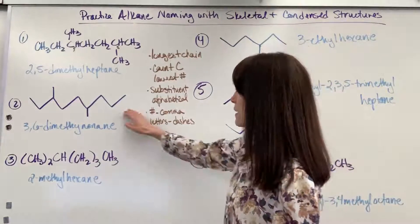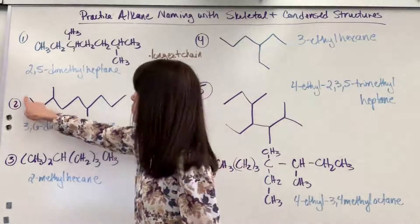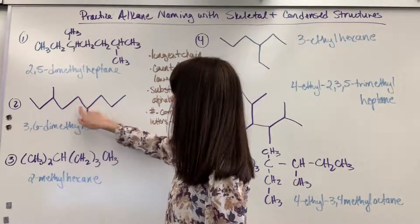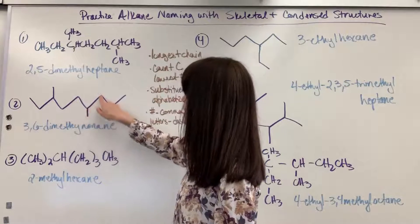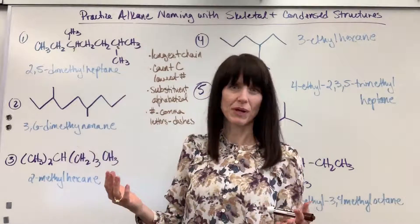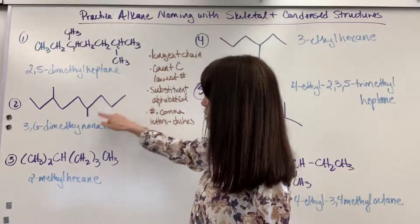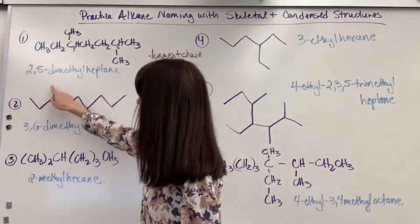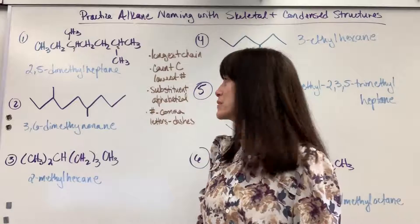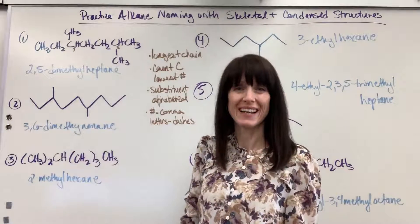Let's look at this skeletal structure. I count my carbons: one, two, three, four, five, six, seven, eight, nine. I can tell that's going to be our longest chain. If I start here and count, or start here and count, I'm not going to get that nine. So my longest chain is going to be nine.